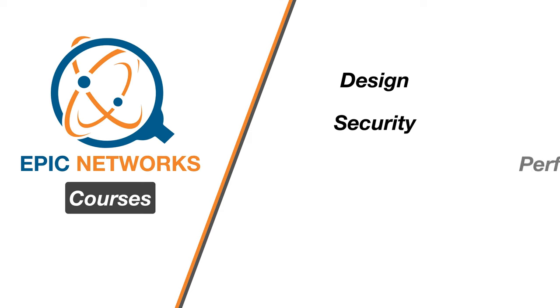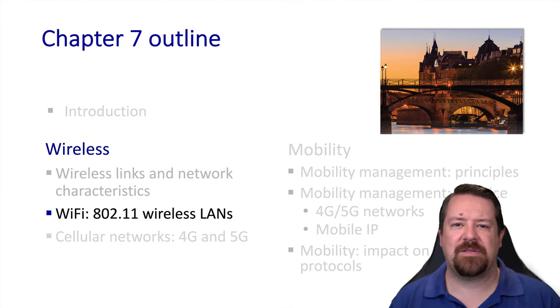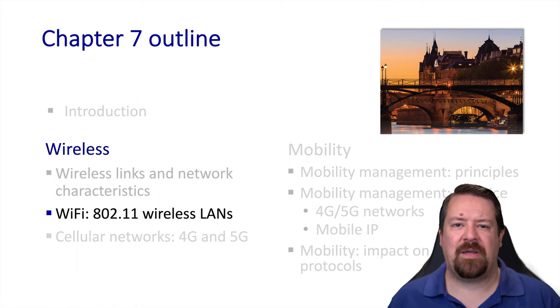In this video, we examine how the 802.11 protocols, commonly known as Wi-Fi, are designed. Now that we've spent some time looking at the differences between wireless links and wired links and some of the challenges that presents, we'll have a better understanding of some of the design decisions made for wireless link layers. We'll start by looking at 802.11 wireless LANs, commonly referred to as Wi-Fi or wireless Ethernet.